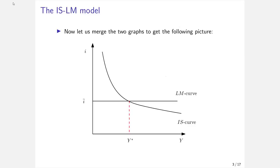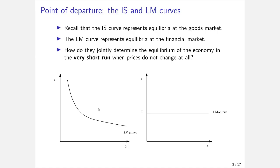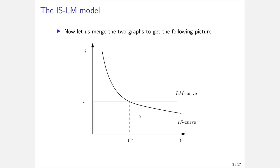We can merge the two diagrams by shifting them so that they are above each other, and we get the famous ISLM diagram. Here we have the interest rate on the vertical axis and income/output on the horizontal axis. We have the downward-sloping IS curve and the horizontal LM curve, and at the intersection of these two curves, the goods market and the money market are both in equilibrium.